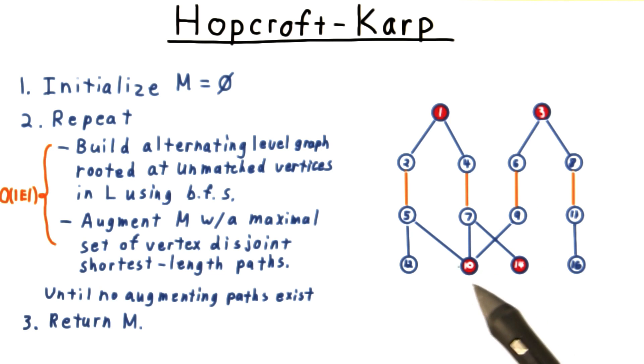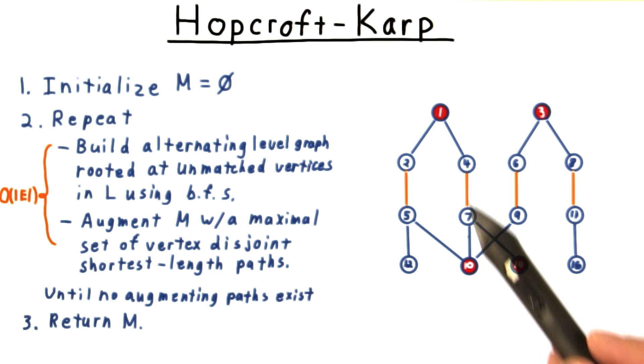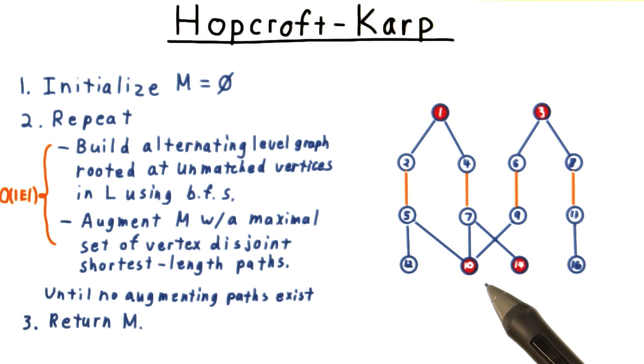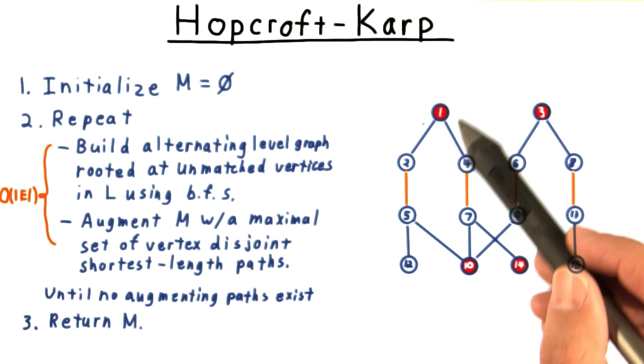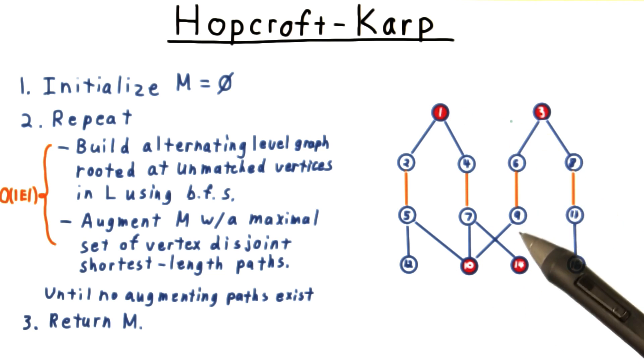As we're picking a path from one of the unmatched vertices in R to one of the unmatched in L, we can follow any edge here. We don't have to be careful at all because, in effect, all roads lead to an unmatched vertex in L.